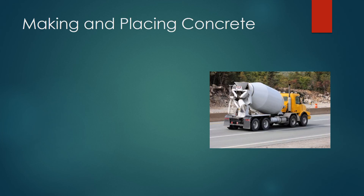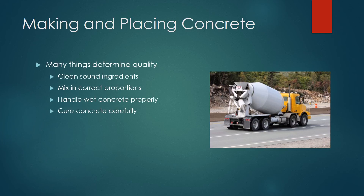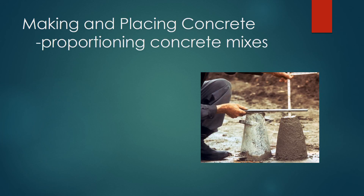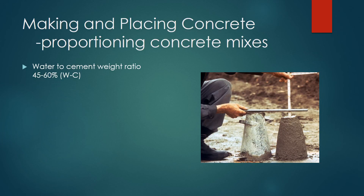Making and placing concrete. Several things determine the quality of concrete: clean sound ingredients, mixing in the correct proportions, handling wet concrete properly, and letting concrete cure carefully in order-controlled conditions. Proportioning concrete mixture is very important. The water-to-cement weight ratio should be about 45 to 60 percent, and it determines workability and strength. More water means more workable but less strength; less water means less workable but more strength.